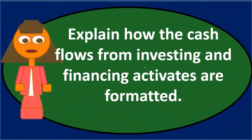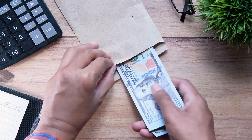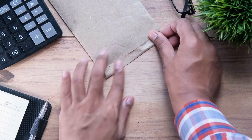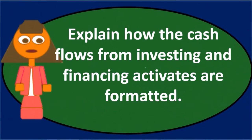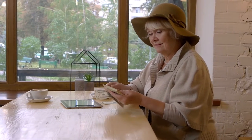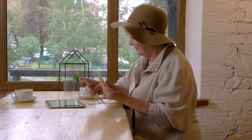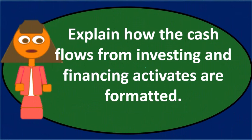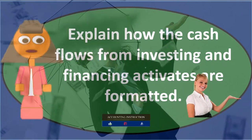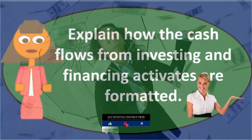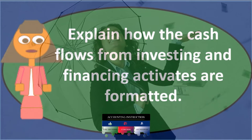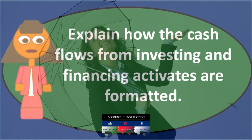If we take out a loan, that increases financing activities. Think about the journal entry: debit cash, credit loan payable — nothing on the income statement. So it's not an operating activity. Also, did we buy anything? No, we just got capital — that's why it's a financing activity. The same logic applies to bonds. If the owner puts money into the company — by issuing stock for a corporation or by an owner contribution for a partnership or sole proprietor — that's a form of financing from the owners.